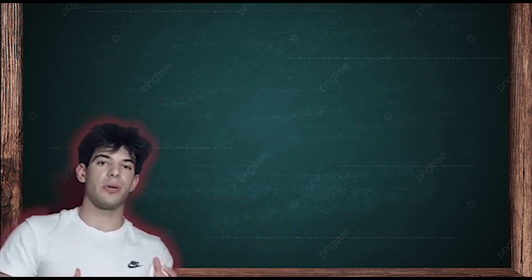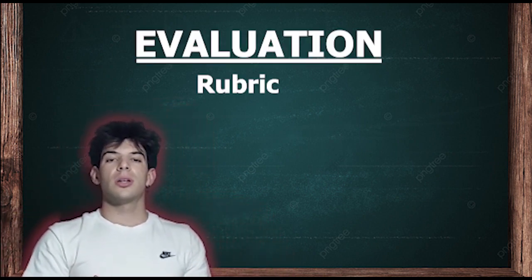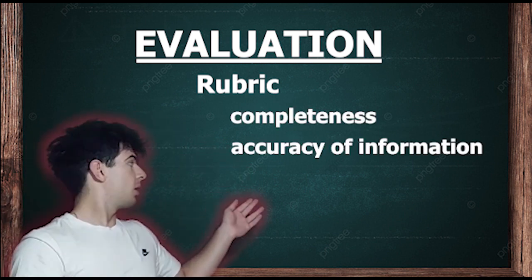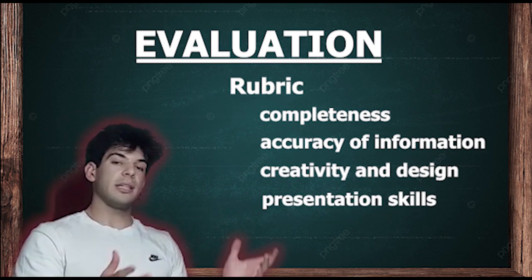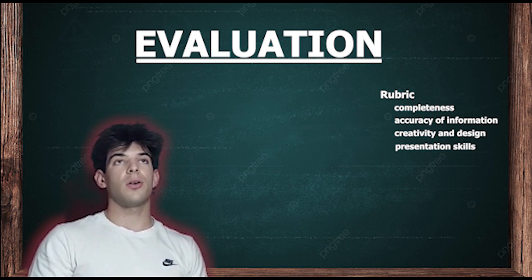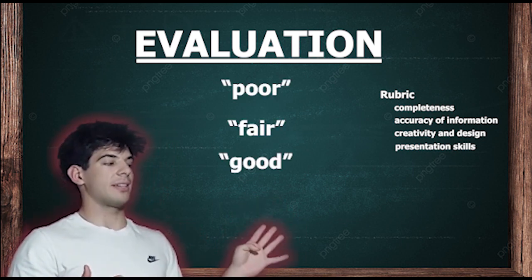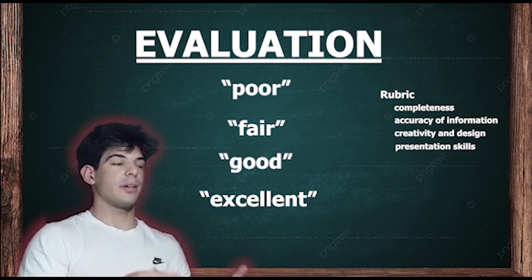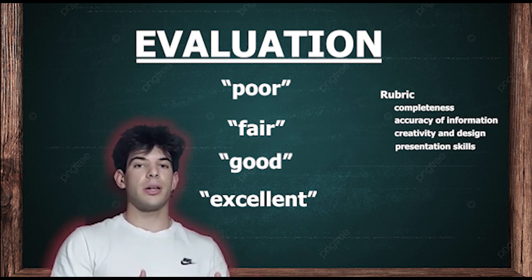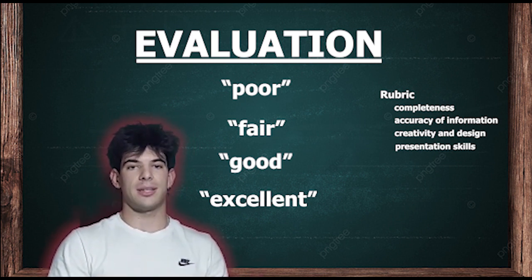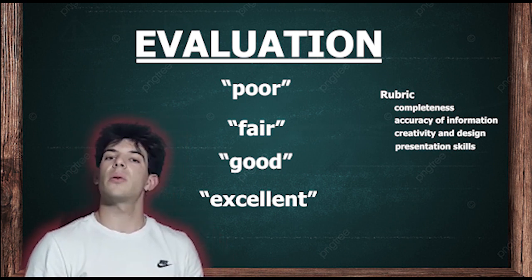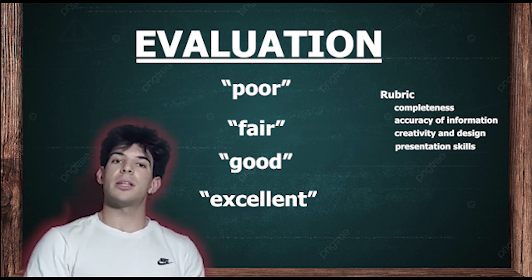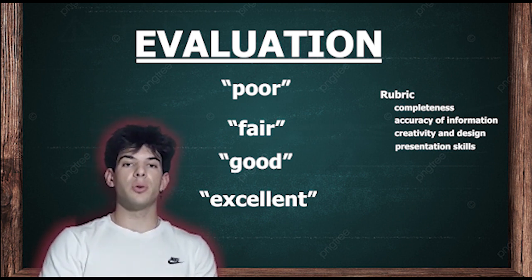A rubric will be used to evaluate the students with some criteria: completeness, accuracy of information, creativity and design, and presentation skills. Each of these criteria will be evaluated on a scale of poor, fair, good or excellent. The completeness criteria will evaluate whether the students have included all of the required elements in their project. If a student includes all required elements, they will get an excellent. If they are missing one or two elements, they will get a good. If they are missing three or four elements, they will get a fair. And if they miss more than four elements, they will get a poor score.